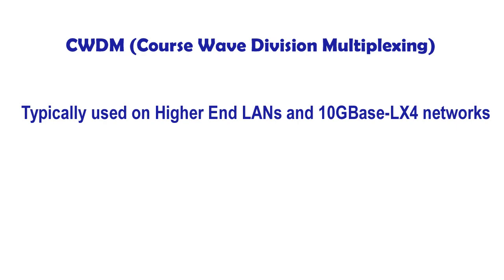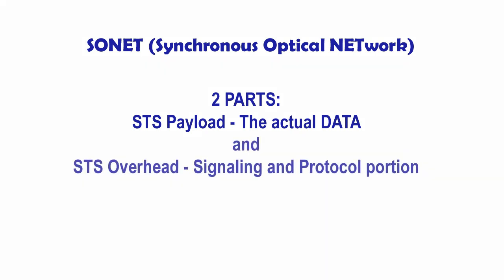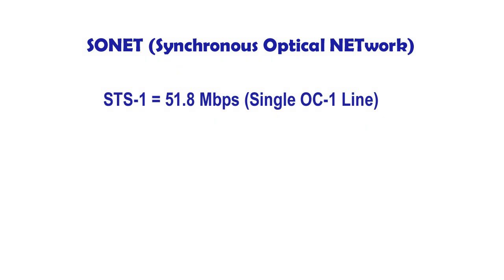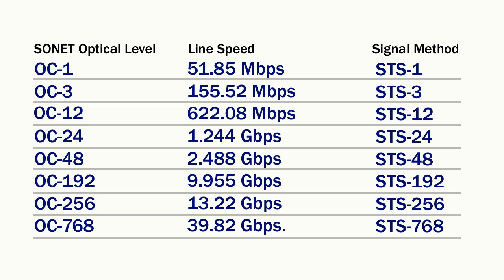Going back to SONET: SONET uses the STS, or Synchronous Transport Signal, as its method. STS is essentially made up of two parts — the payload portion, or STS payload, which carries the actual data, and the overhead, or STS overhead, which carries the signaling and protocol information. When studying STS, you add a number to the end to indicate the speed of the connection: STS1 runs at 51.8 megabits per second on a single OC1 line, and STS3 runs at 155.52 megabits per second on OC3 lines. You'll want to study and know the table of connections, speeds, and methods for the exam.